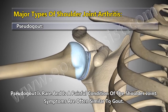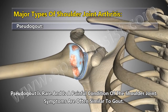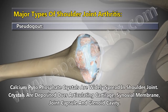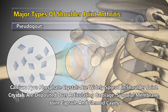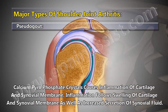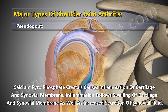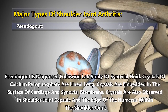Pseudogout is a rare and painful condition of the shoulder joint with symptoms often similar to gout. Calcium pyrophosphate crystals are widely spread in the shoulder joint, deposited over articulating cartilage, synovial membrane, joint capsule, and glenoid cavity. These crystals cause inflammation of cartilage and synovial membrane, followed by swelling and increased secretion of synovial fluid. Pseudogout is diagnosed following lab study of synovial fluid.